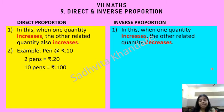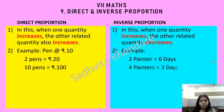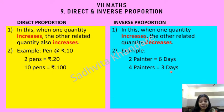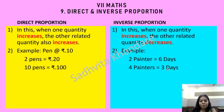In inverse proportion, when one quantity increases the other related quantity decreases. For example, two painters are going to take six days to finish the work. If there are four painters they are going to take only three days. When the number of painters increased, the number of days decreased — that is inverse proportion.